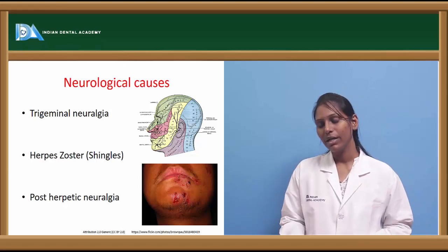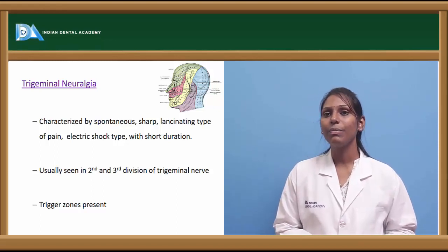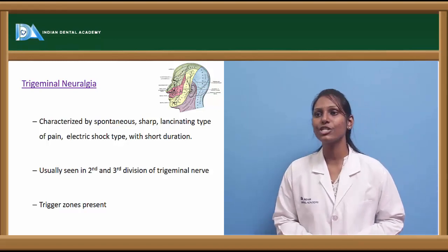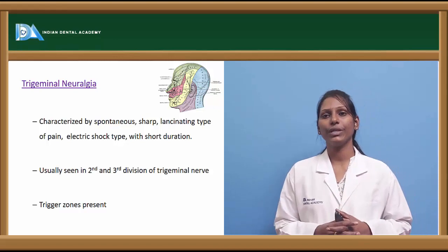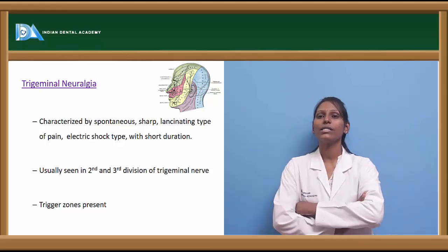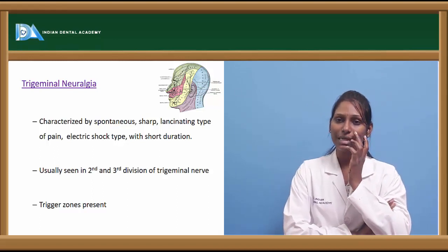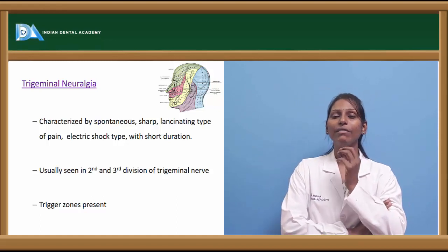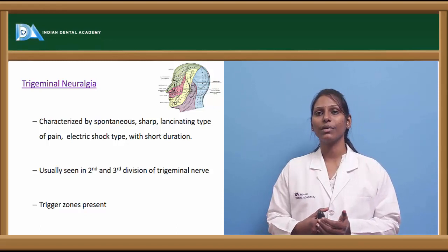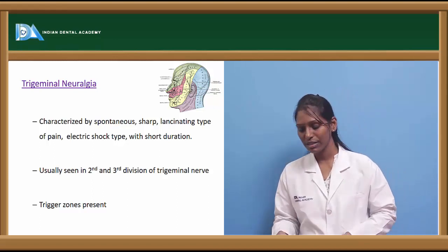Neurologic causes of facial pain include trigeminal neuralgia, herpes zoster, and post-herpetic neuralgia. Trigeminal neuralgia is characterized by sudden onset, sharp, lancinating or stabbing pain in the distribution of the ophthalmic, maxillary, or mandibular branches of the trigeminal nerve — like an electric shock — of short duration. It is most commonly seen in the second and third divisions, with the mandibular division more predominantly affected. Trigger zones are present at the upper lip or ala of the nose, activated by touch, brushing, or splashing water on the face.